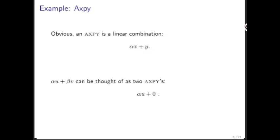You can also think of alpha u plus beta v as two Axps. How can we do that? Well, here we can look at this as alpha x plus y, where y is the zero vector and x is u. Then, once we've computed this as a vector, this itself becomes a vector again.